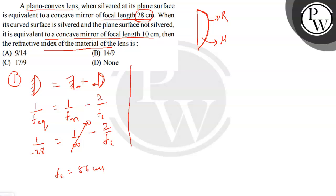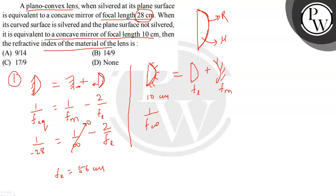Case 2: the curved surface is silvered and the plane surface is not silvered. We can break it down as a lens combined with a concave mirror (the silvered curved surface). The equivalent focal length is given as 10 cm. Using the same formula: 1/f_equivalent = 1/f_mirror − 2/f_lens, so 1/(−10) = 1/(−f_m) − 2/f_L.